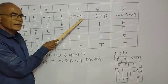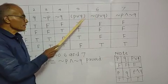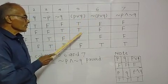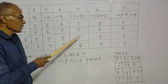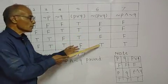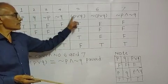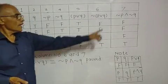Now for the seventh column, negation of P and negation of Q. This is negation of P and this is negation of Q. P and Q - for AND remember.